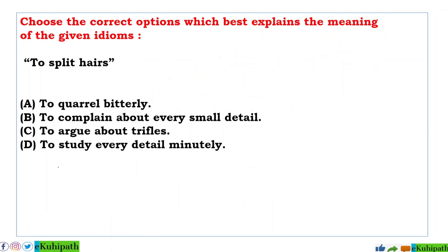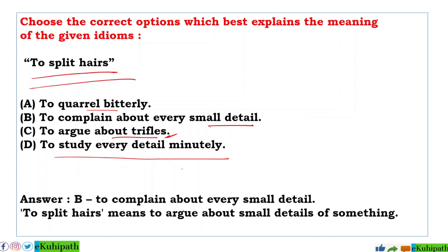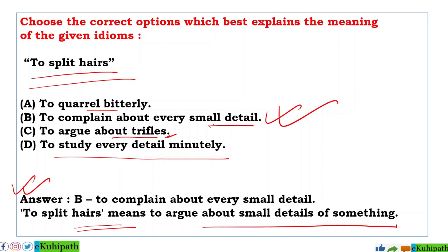Next: Choose the correct option which best explains the meaning of the given idiom. First idiom: 'to split hairs'. Options: A: to quarrel bitterly, B: to complain about every small detail, C: to argue about trifles, D: to study every detail minutely. The answer is B — to complain about every small detail. To split hairs means to argue about small details of something.